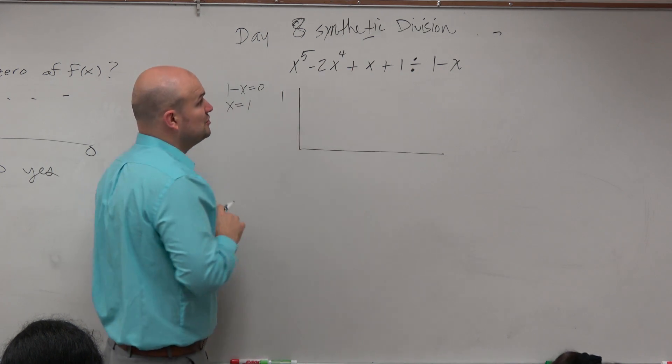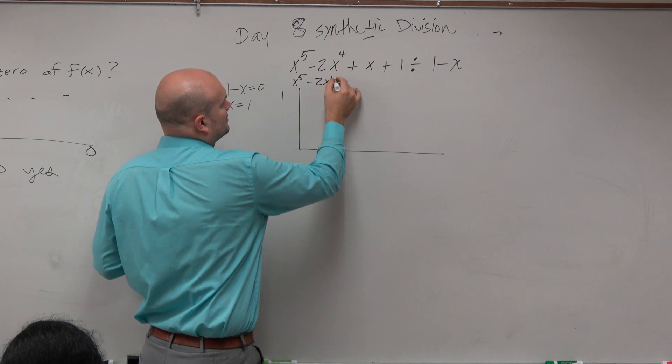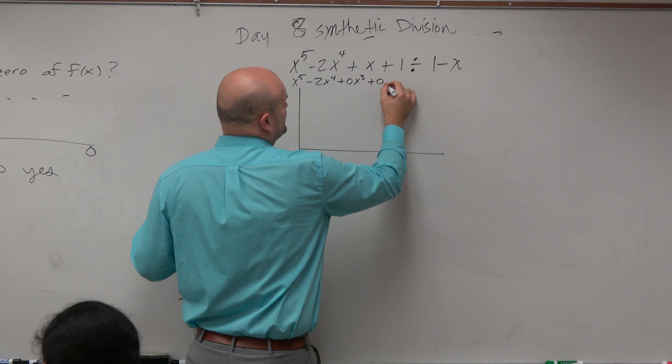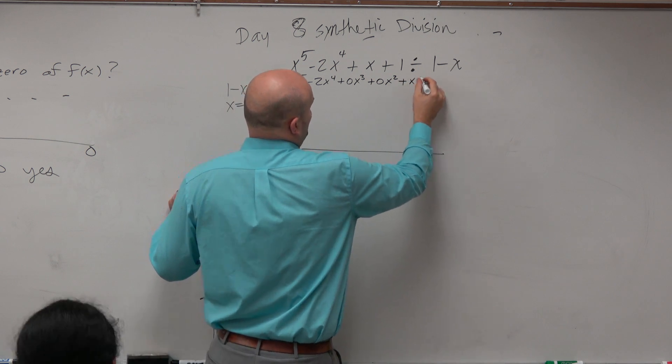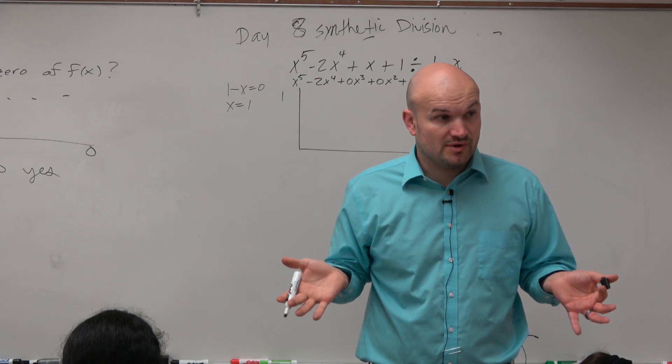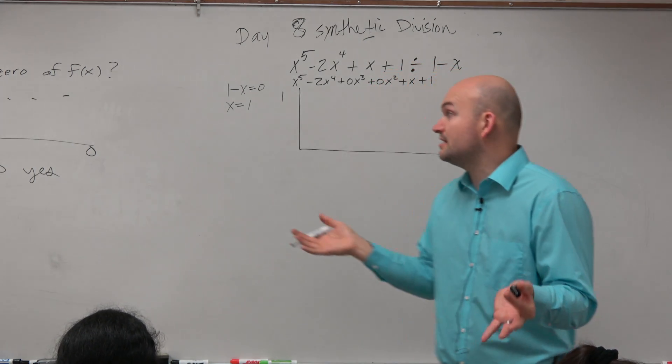We don't have an x cubed. We don't have an x squared. So what I'm going to do is I am just going to write those with 0s plus 0x cubed plus 0x squared plus x plus 1. And there's nothing wrong with writing 0x cubed or 0x squared, right? Nothing wrong with it. I mean, it's still 0. It's not changing anything.